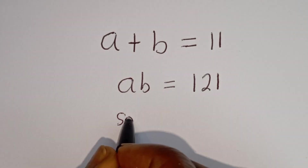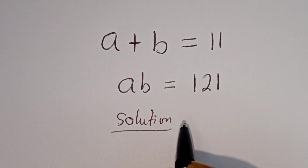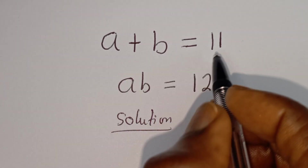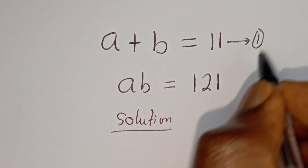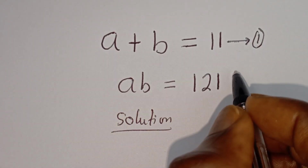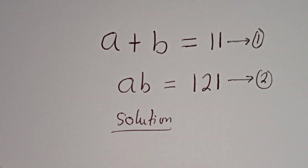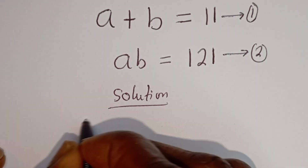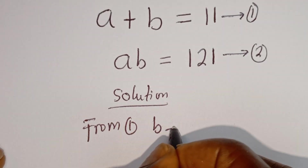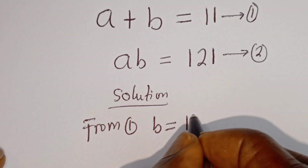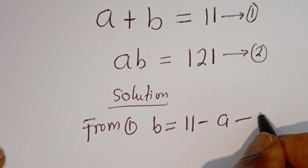Solution. A plus B is equal to 11 — let's call this equation 1. A times B is equal to 121 — let's call this equation 2. Then from equation 1, B is equal to 11 minus A. Let's call this equation 3.